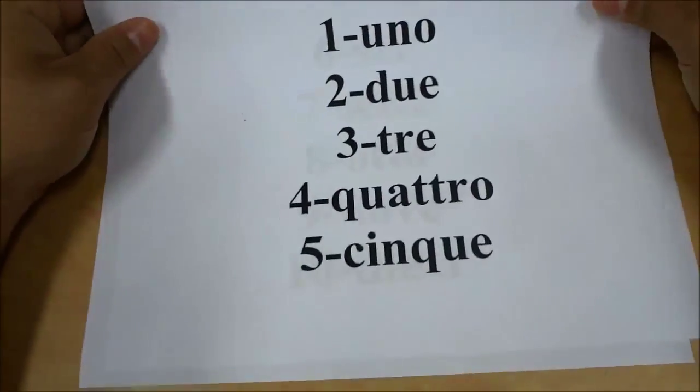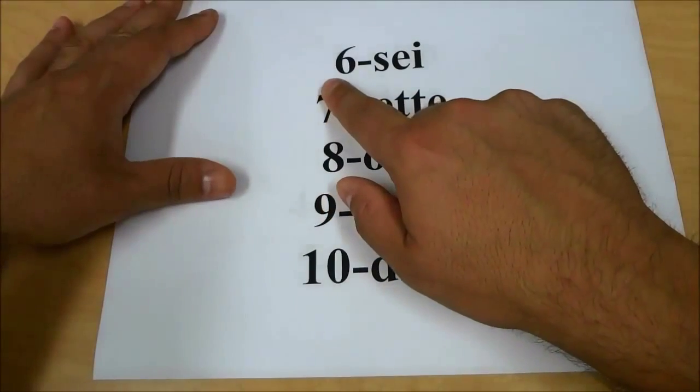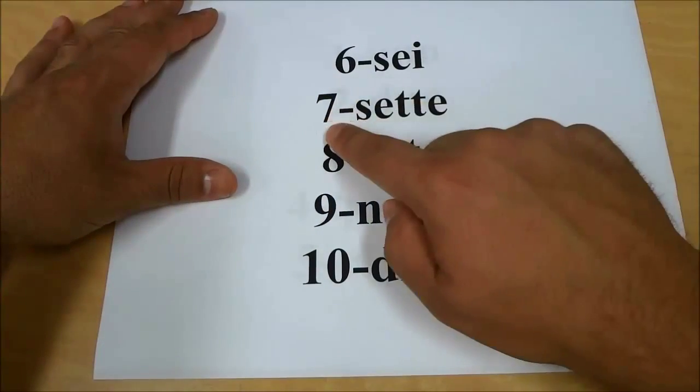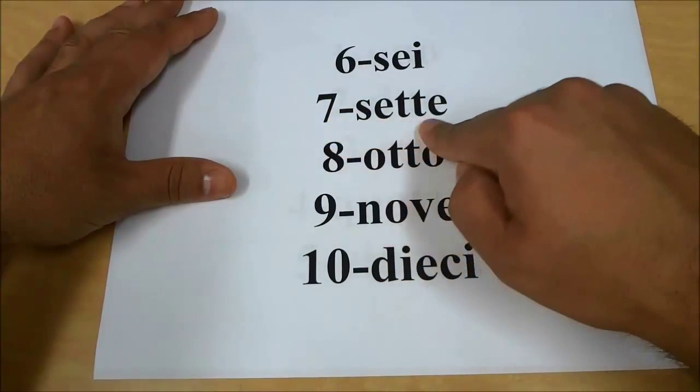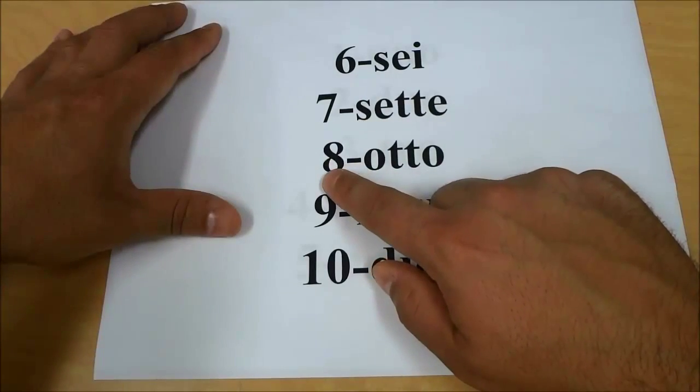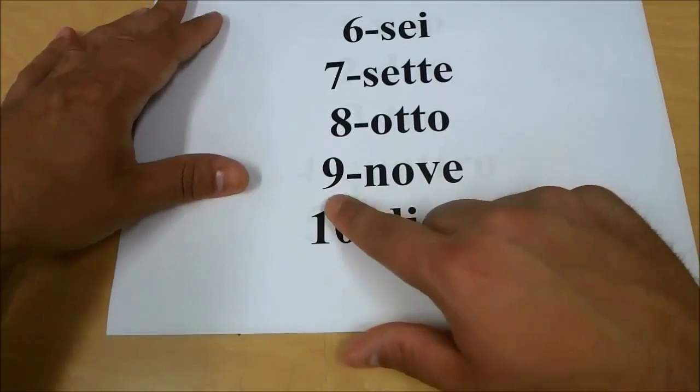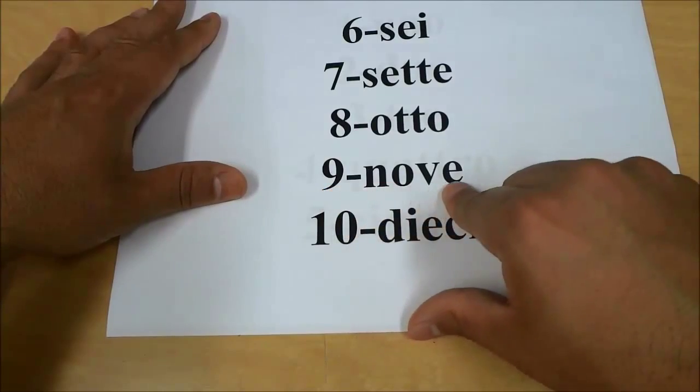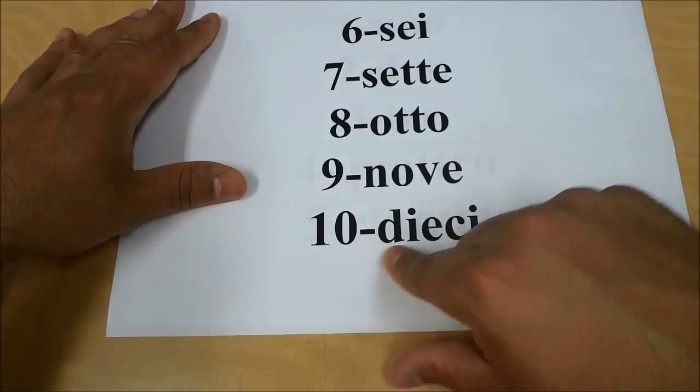and I'll just flip the page to get to the other 5. 6 is sei, 7 is sette, 8 is otto, 9 is nove, and 10 is dieci.